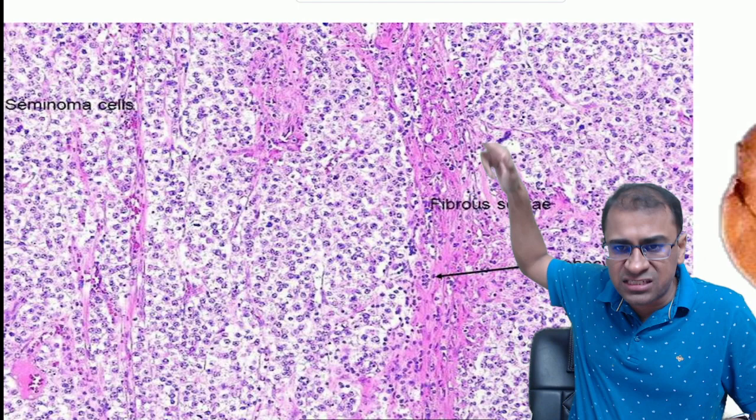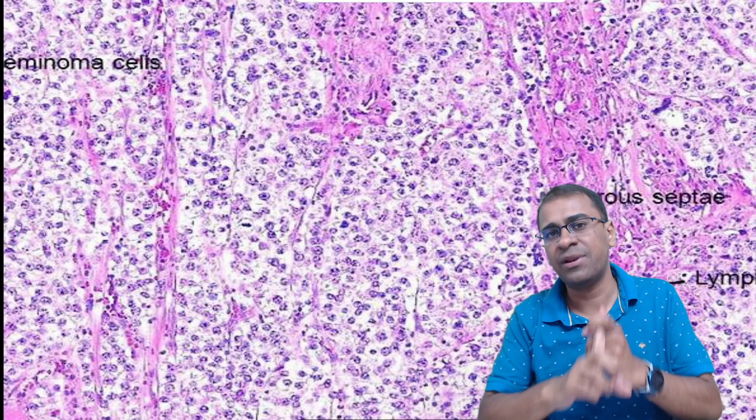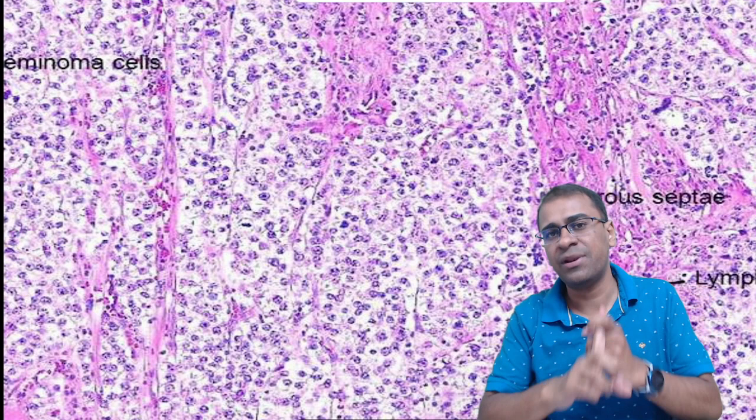This is a seminoma, and this is the fibrous tissue with lymphocytic infiltrates — these are all the seminoma cells. It is very similar to the dysgerminoma of the ovarian counterpart. Rest, all tumors in the testes are exactly the same as the ovarian carcinoma counterpart.